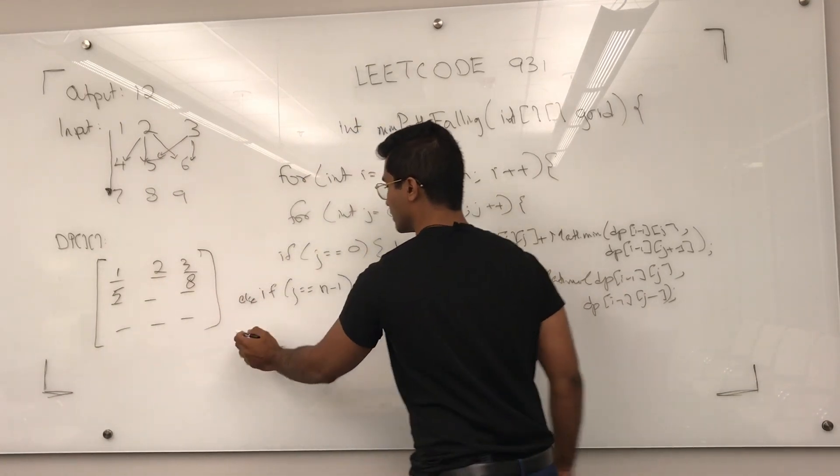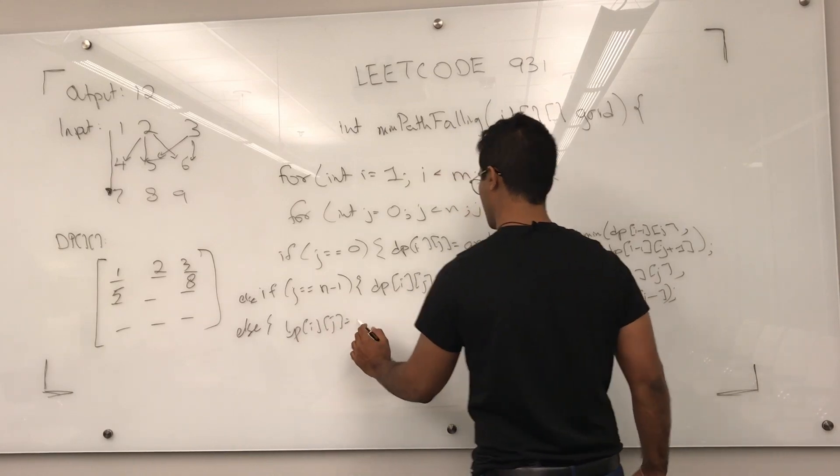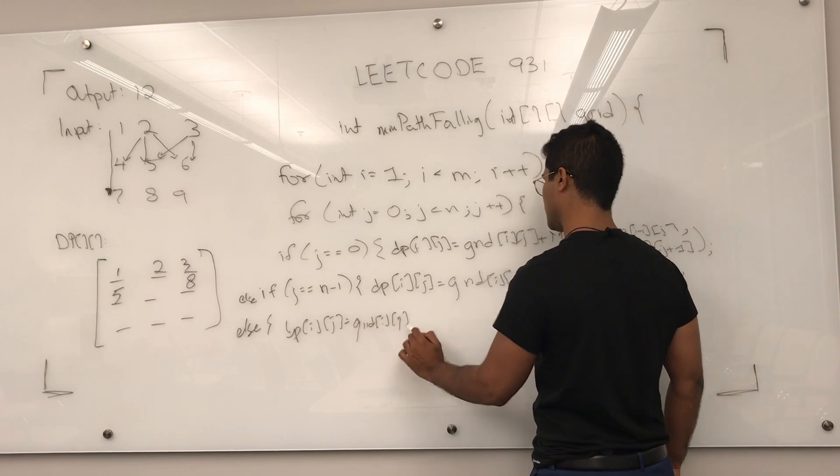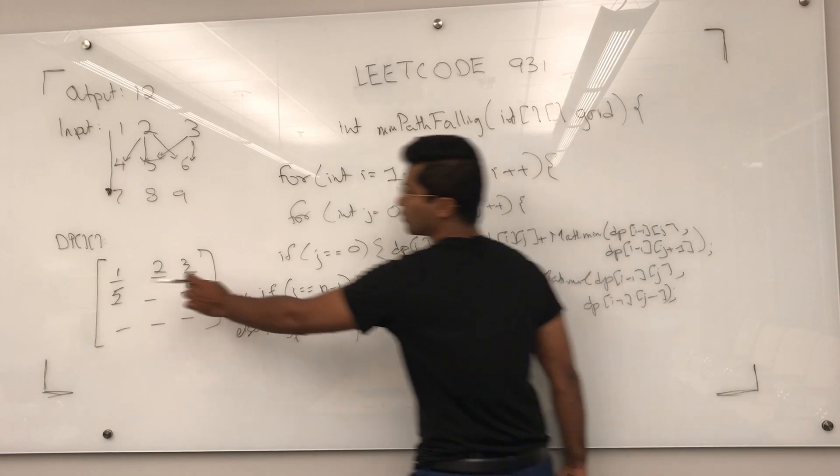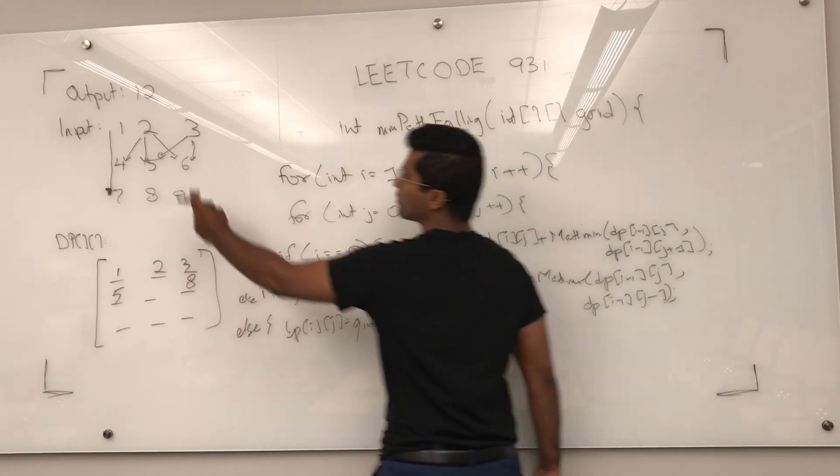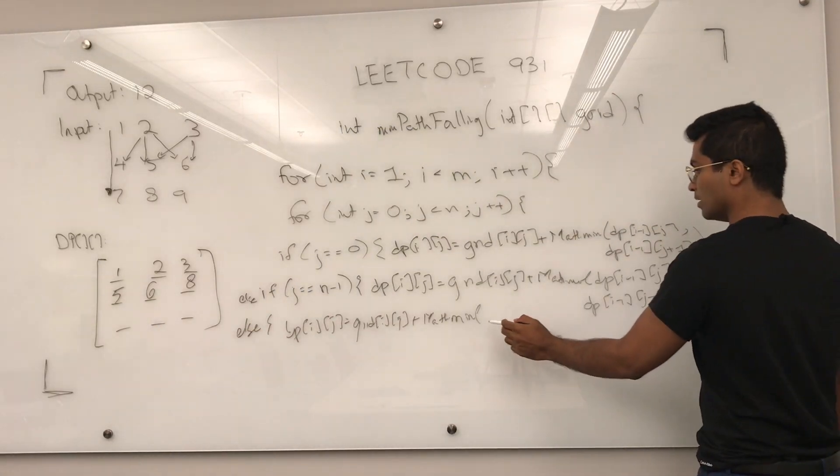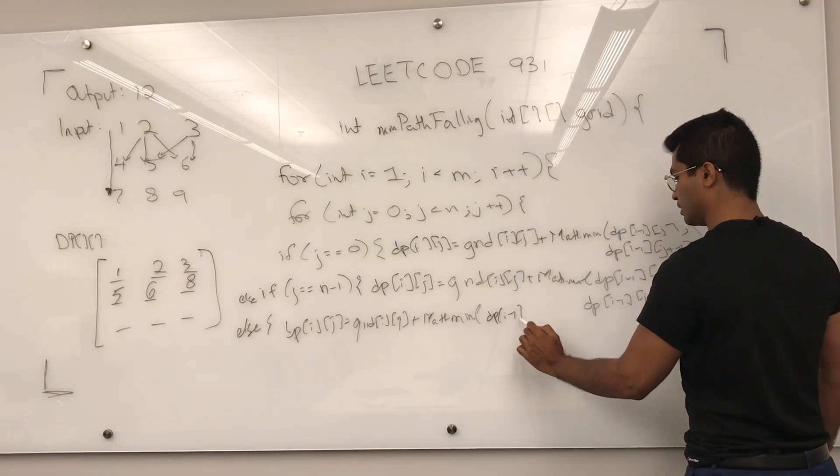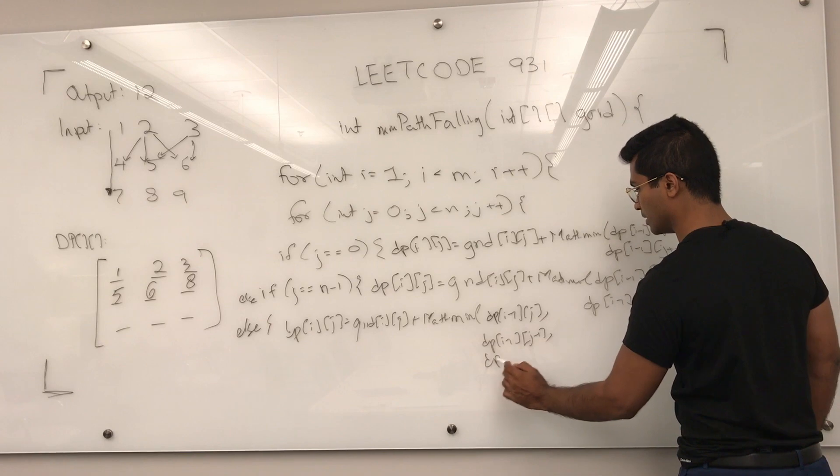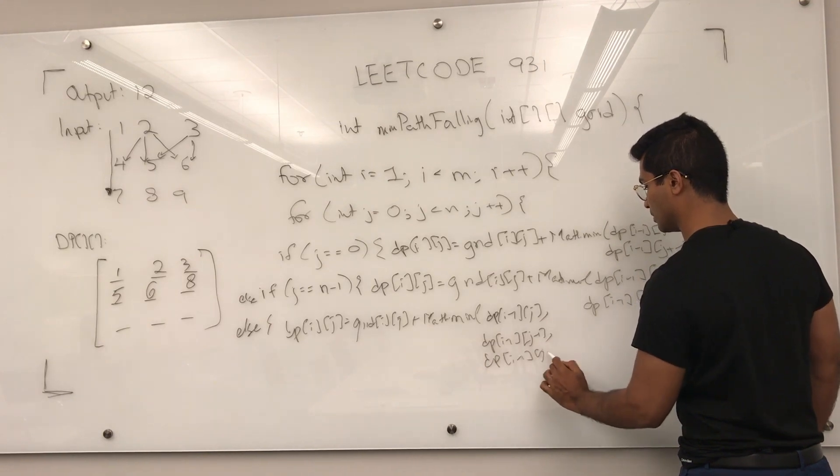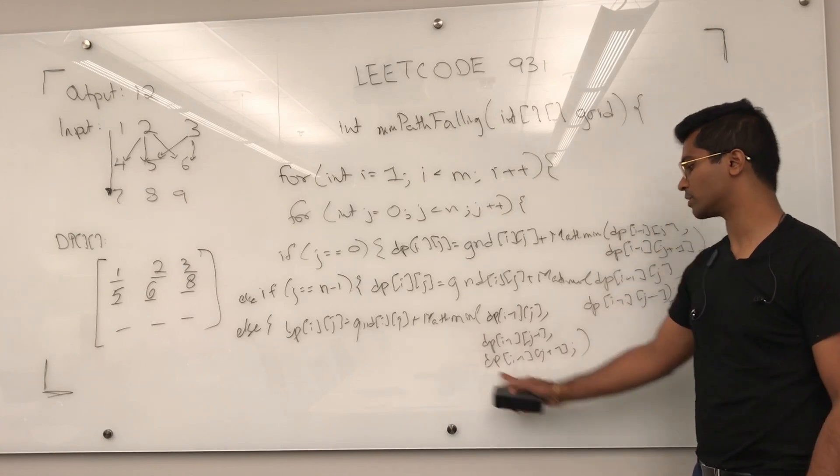Now, when we come here, all we have to do is write else, dp[i][j] is going to be grid[i][j] plus Math.min of the three things above it plus itself. So, it's going to be either 5 plus 1 plus 2 or 3, it's going to be 6. dp[i-1][j], dp[i-1][j-1], dp[i-1][j+1]. Now, I know there's no Math.min which takes 3, but you get the idea.